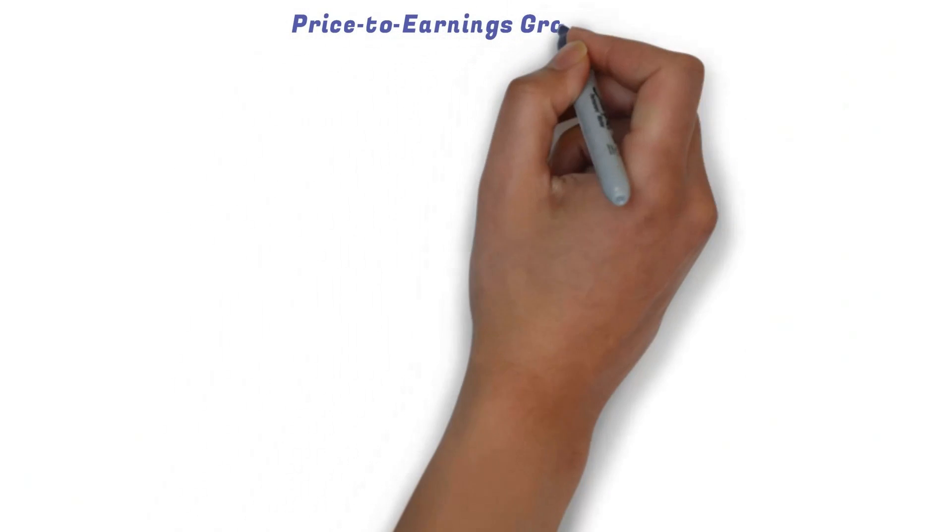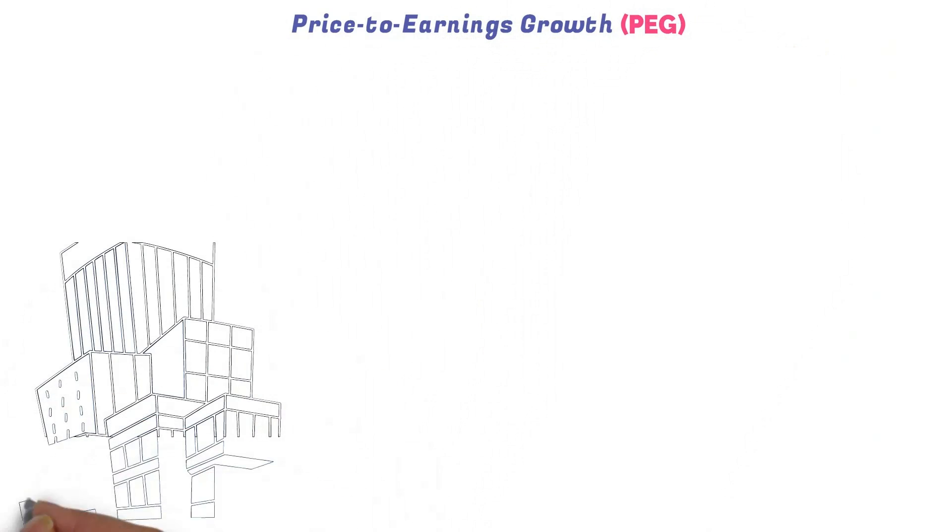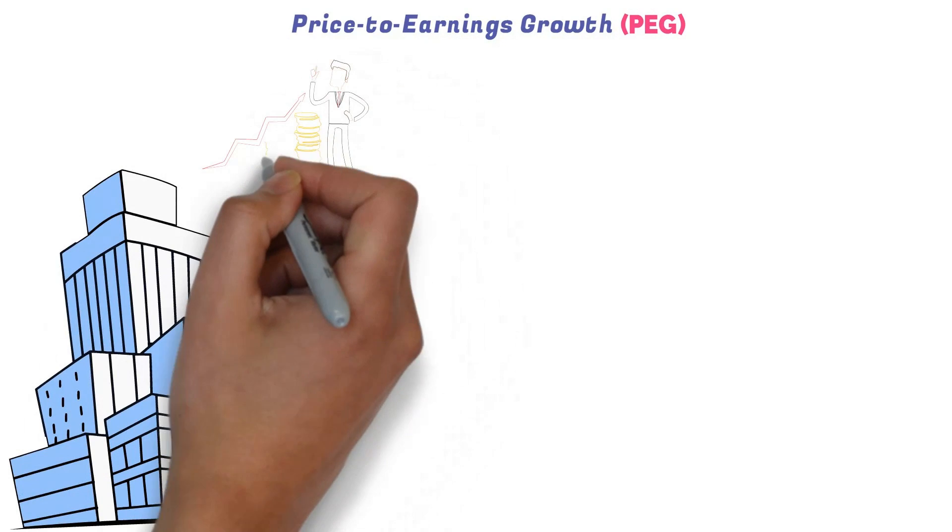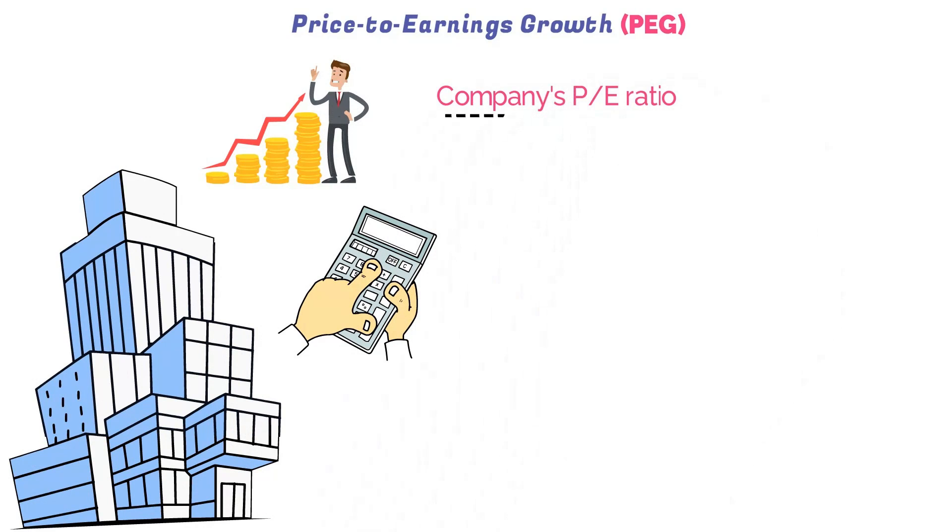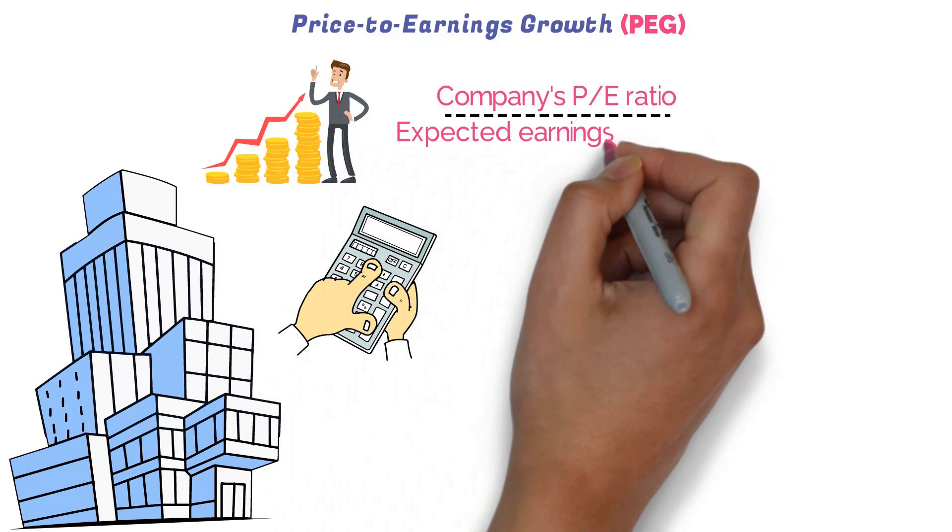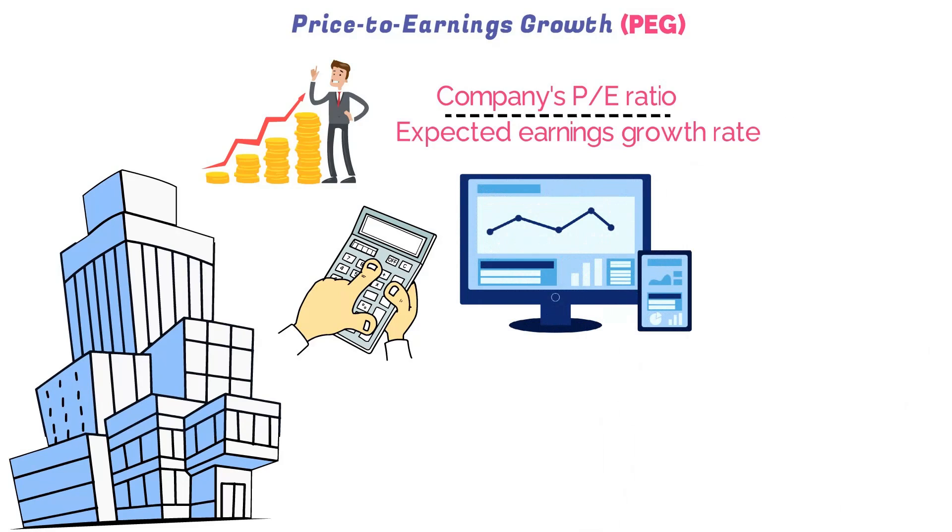The price-to-earnings growth, or the PEG ratio, is a variation of the P/E ratio that takes into account a company's expected earnings growth rate. It's calculated by dividing a company's P/E ratio by its expected earnings growth rate. The PEG ratio provides a more complete picture of a company's value by factoring in its earnings growth potential.